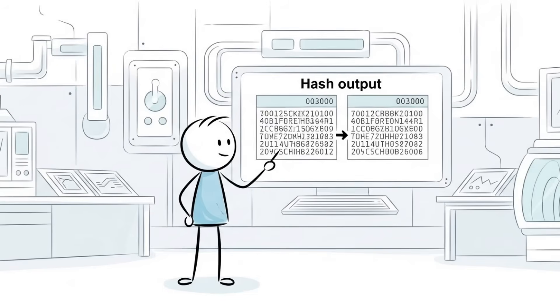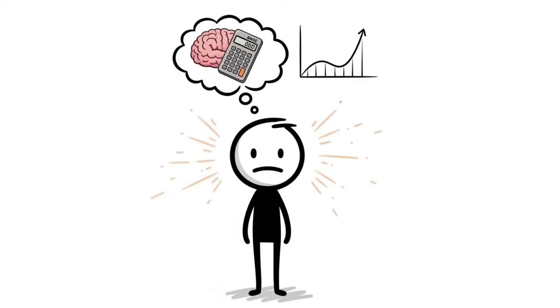Cryptographers exploit this exact principle in hash collision attacks, where matching outputs happen far sooner than you'd expect in massive data sets. The paradox isn't that the math is broken, it's that your brain never learned to count combinations exponentially.